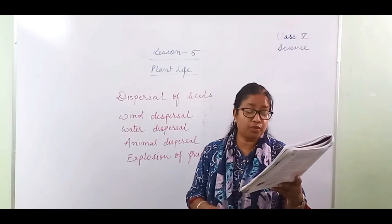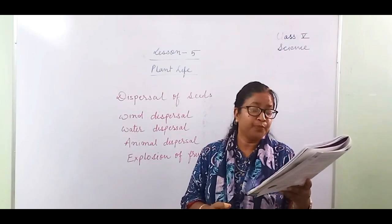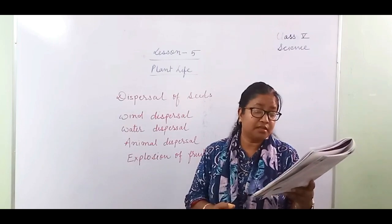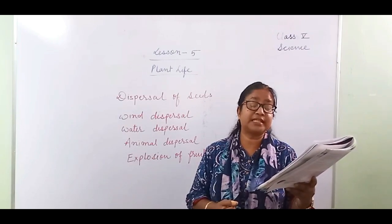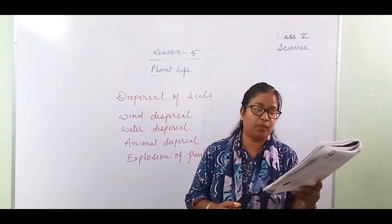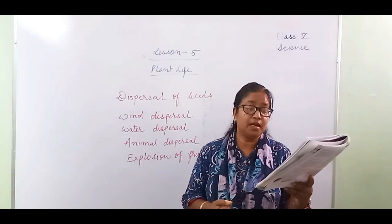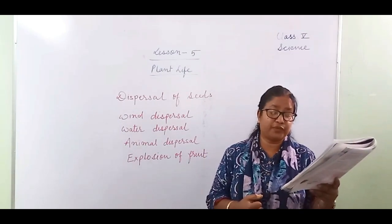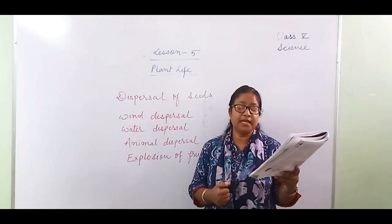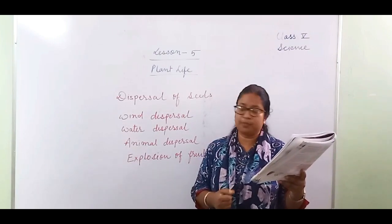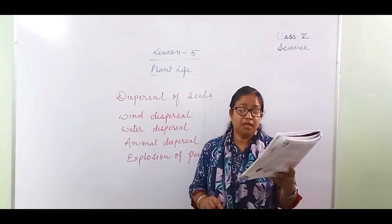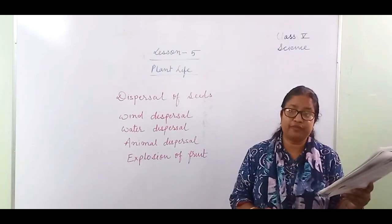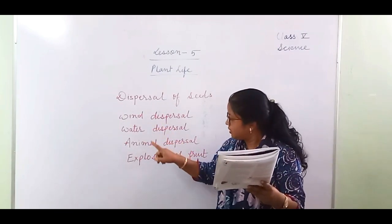Since a plant produces a large number of seeds, nature has provided means of scattering seeds far and wide so that crowding is reduced. The scattering of seeds away from the parent plant is called seed dispersal.